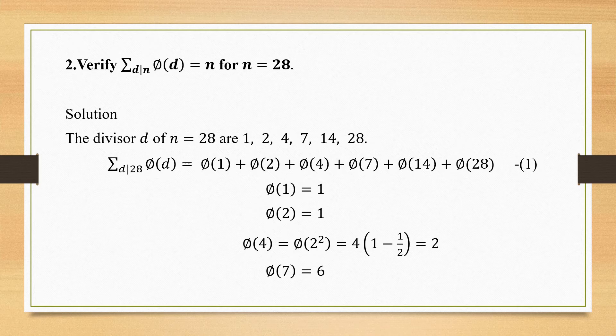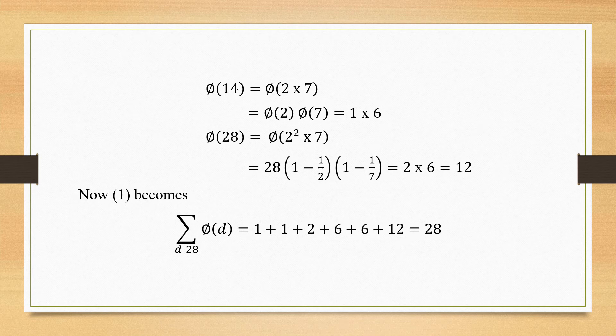We find each value: φ(1) = 1; φ(2) = 2 - 1 = 1; φ(4) = φ(2²) = 2² · (1 - 1/2) = 2; φ(7) = 7 - 1 = 6. For φ(14) = φ(2 × 7) = φ(2) · φ(7) = (2 - 1)(7 - 1) = 1 × 6 = 6.